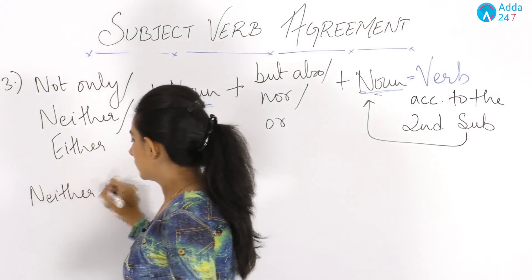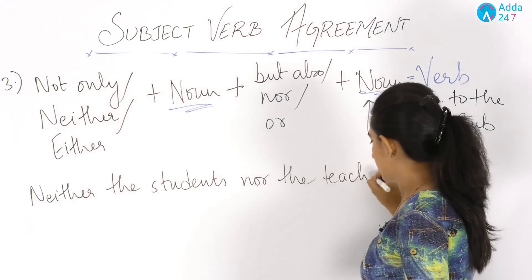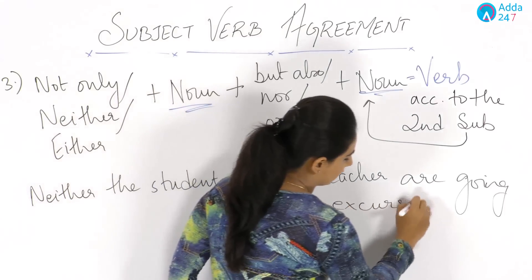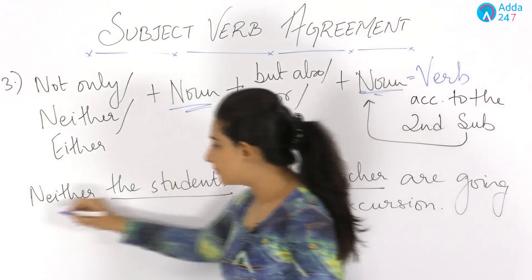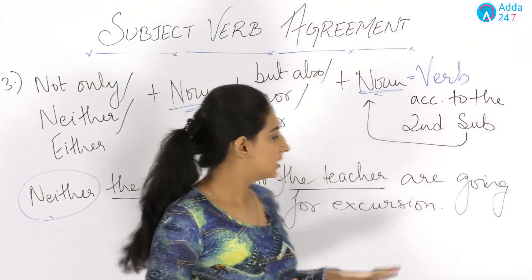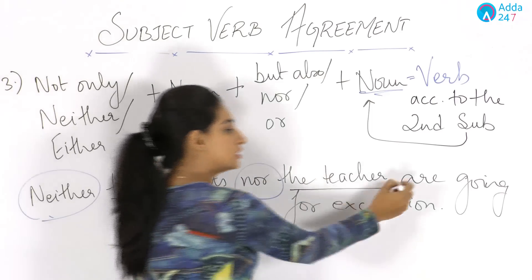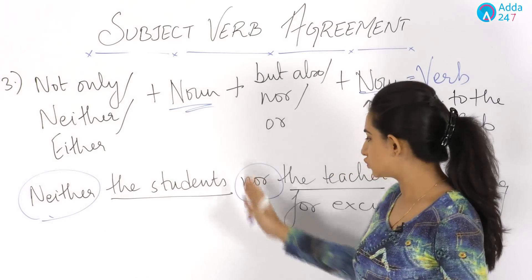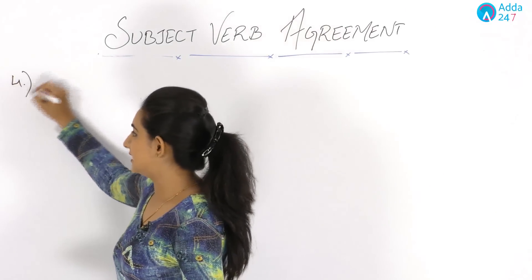For example: 'Neither the students nor the teacher are going for excursion.' This is incorrect. The nouns are joined by 'neither...nor', so the verb must agree with the second subject — 'teacher', which is singular. The correct sentence is: 'Neither the students nor the teacher is going for excursion.'